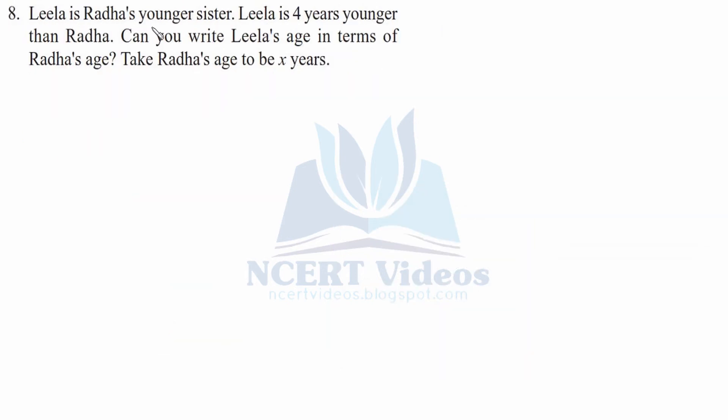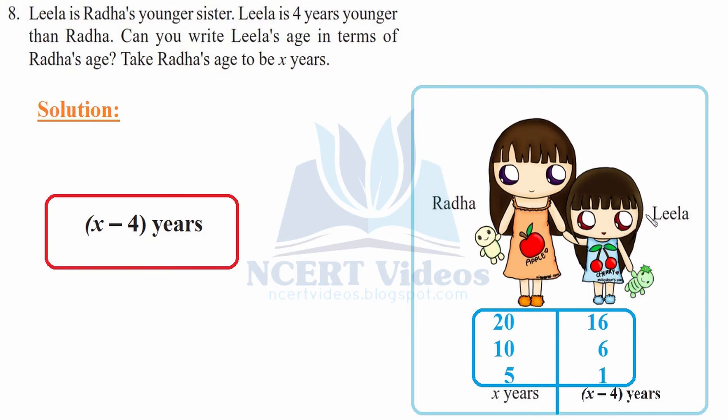Question 8: Leela is Radha's younger sister. Leela is 4 years younger than Radha. Can you write Leela's age in terms of Radha's age? Take Radha's age to be X years. These are two sisters. Radha is older, Leela is younger as given in the question. And there is a difference in their ages of 4 years. Radha is obviously older. So if she is 10 years old, Leela will be 6 years old. And if Radha is 10 years old, Leela will be 6 years old. Similarly, if Radha is 5 years old, then Leela would be 1 year old, because she is 4 years less than her elder sister. So if Radha is X years, then Leela will be X minus 4 years. This is the expression that we get from this question.